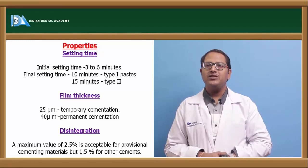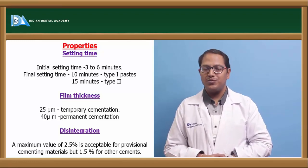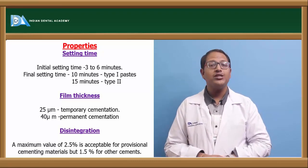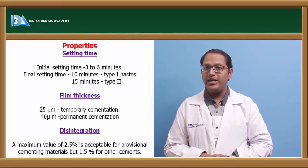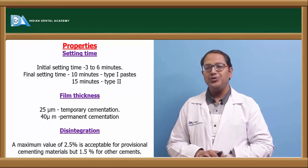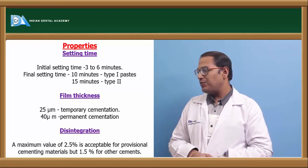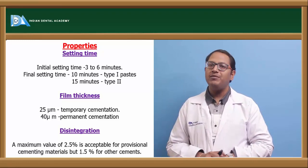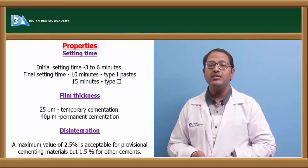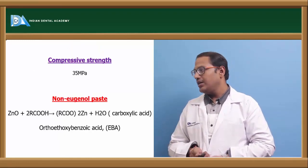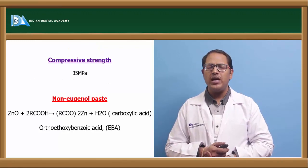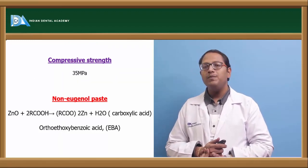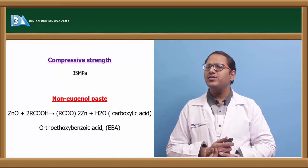Initial setting time for ZOE is 3 to 6 minutes; final setting time for Type 1 (permanent restoration) is 10 minutes, and Type 2 is 15 minutes. The solubility is very high, so patients should not drink water as it will dissolve the cement. The compressive strength is very weak at only 35 MPa. Maximum acceptable solubility is 2.5% for provisional cements and 1.5% for cavity liners or permanent restorations.